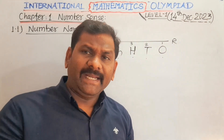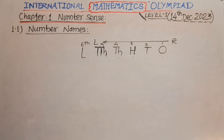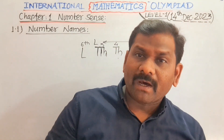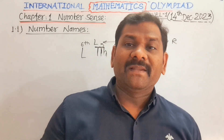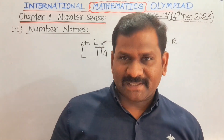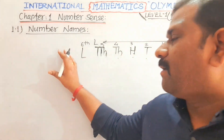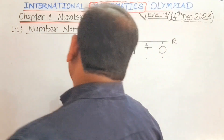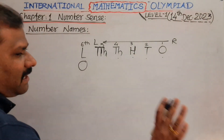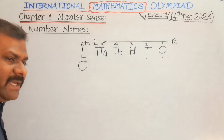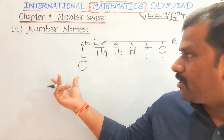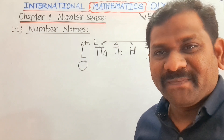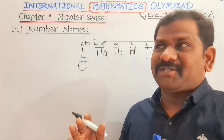If you put any digit, you can make numbers. But always remember, if you are going to make a 6-digit number, there should not be a zero at the 6th place — the lakh position. It will not be a 6-digit number if you put zero at the lakh position. It will become a 5-digit number.